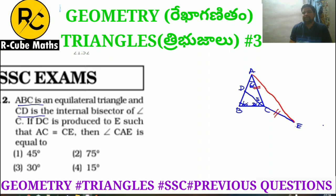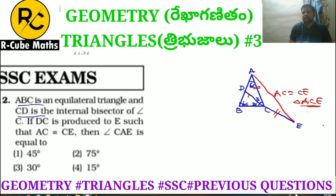Now triangle ACE is formed. Since AC is equal to CE, triangle ACE is an isosceles triangle. Therefore angle CAE is equal to angle CEA.